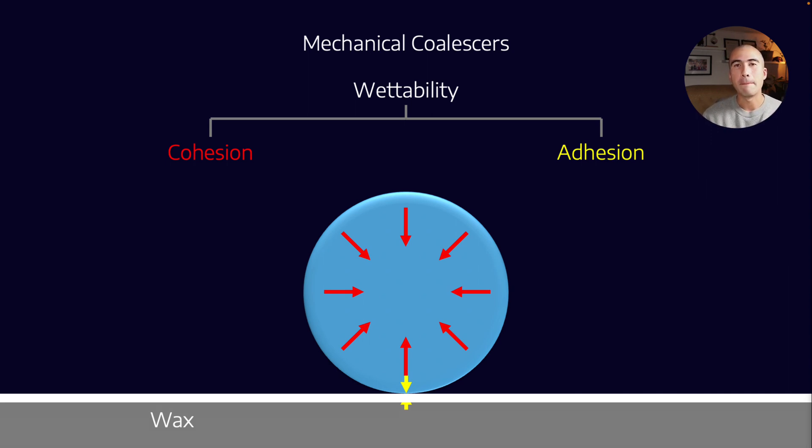And so in order to minimize the amount of contact area with the wax, it forms a spherical droplet on top of the wax.